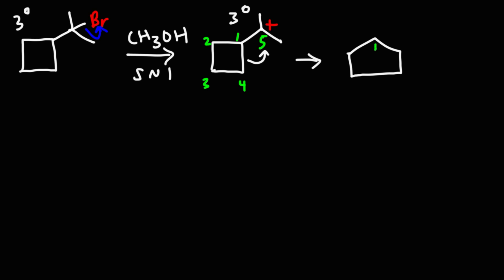The five-carbon ring has carbon five attached to two methyl groups. Carbon five gained the bond so it loses the positive charge; carbon four lost the bond but got it back; carbon one lost the bond and didn't get it back, so carbon one is going to have the positive charge.